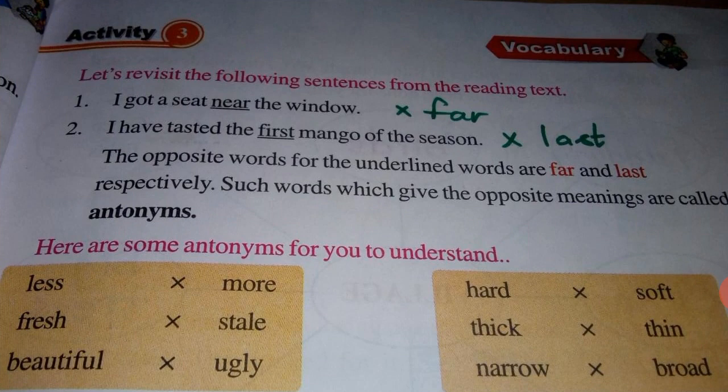Now see the vocabulary activity, Activity number 3, page number 25. Let's revisit the following sentences from the reading text. First: 'I got a seat near the window.' The underlined word is 'near'. The opposite of near is far. Second: 'I have tasted the first mango of the season.' The underlined word is 'first'. The opposite of first is last.